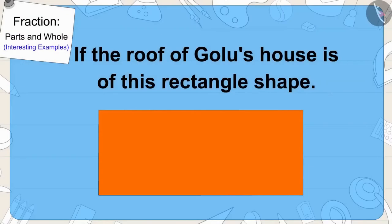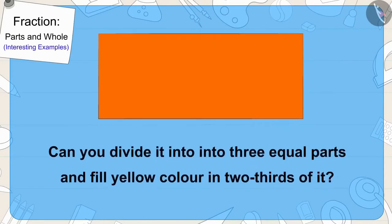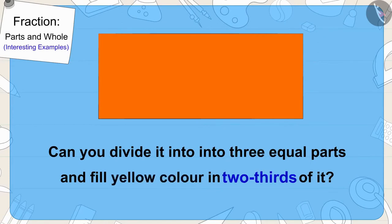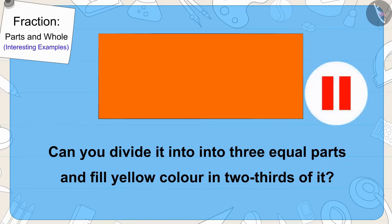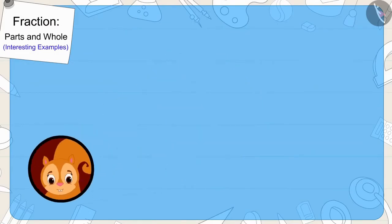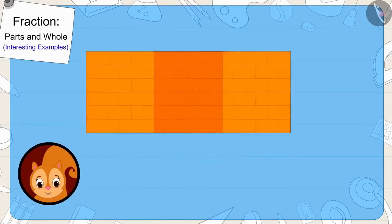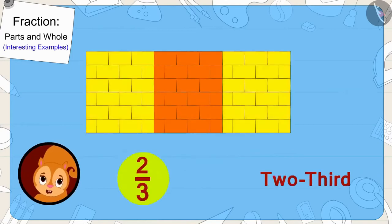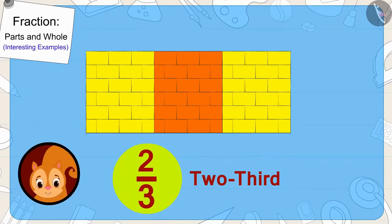If the roof of Golu's house is of this shape, can you divide it into three equal parts and fill yellow color in two-thirds of it? If you wish to, you can find the answer by pausing the video. Well done, children. In this way, we can fill yellow color in two-thirds of the roof.